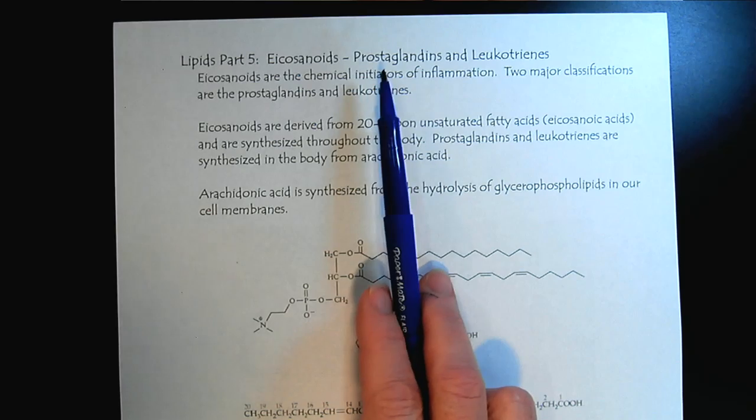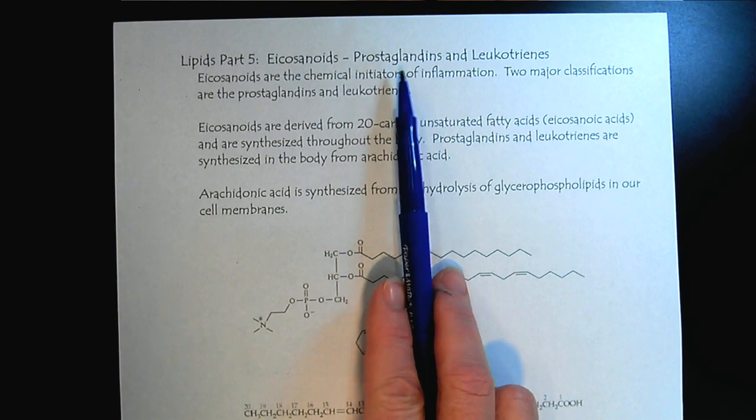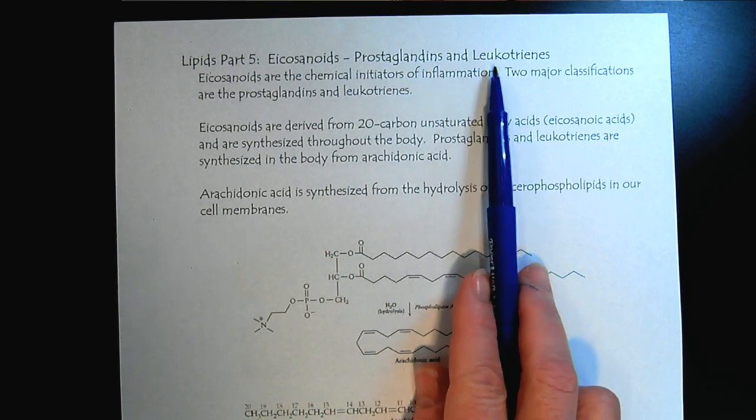There are three main classes of eicosanoids. We're going to focus on two of them: the prostaglandins and the leukotrienes.